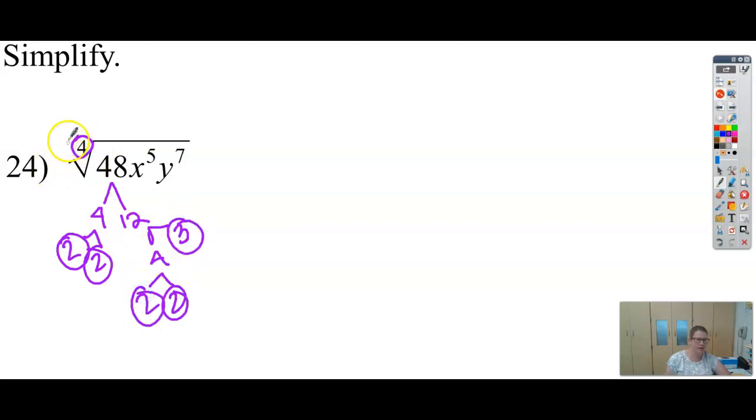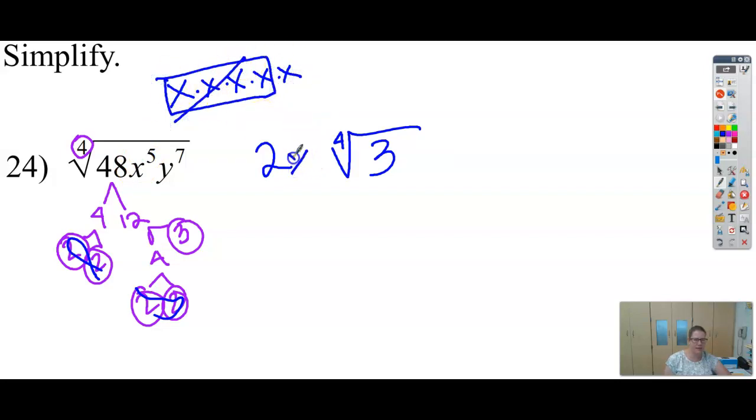Again, I need 4 copies in order to bring 1 out. So I'm going to bring out a 2 because there's 4 2s. And the 3 will have to stay inside. It's still a 4th root, so I need a little 4 there. x to the 5th means x multiplied 5 times. So for these 4, I can bring 1 out. And that one has to stay inside.